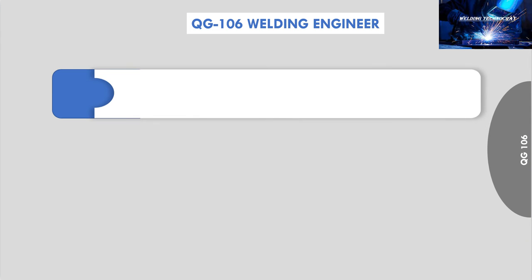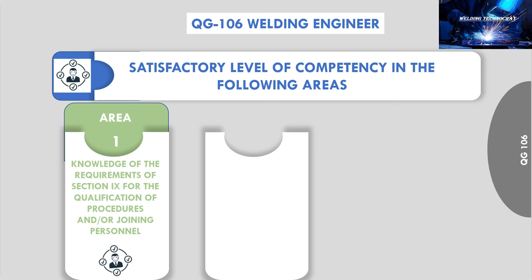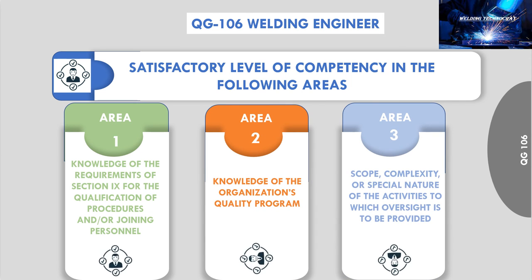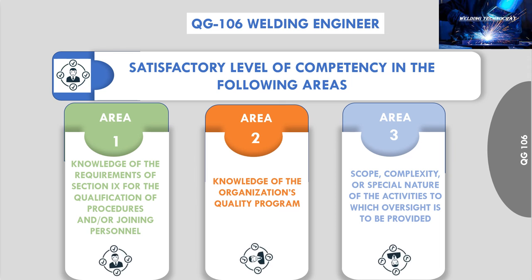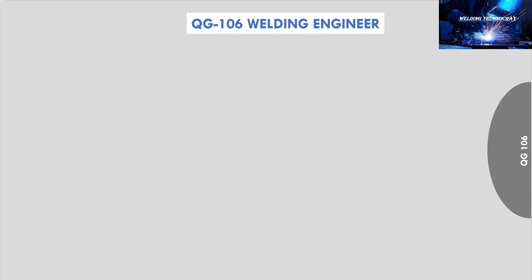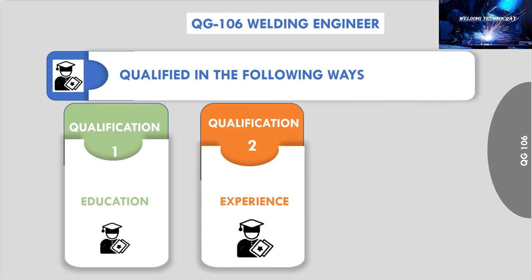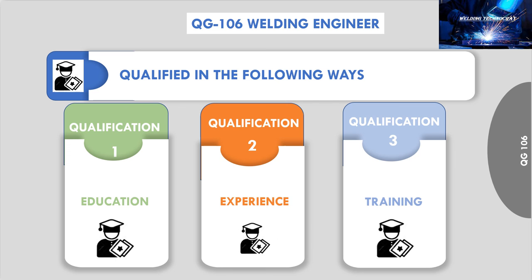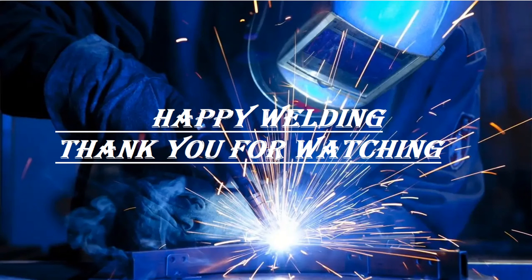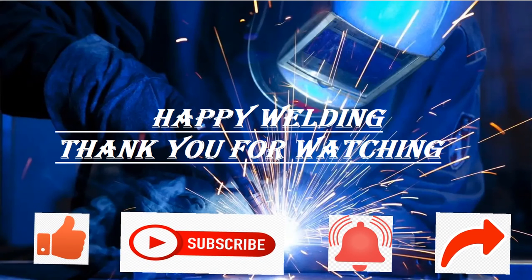In conclusion, as per ASME BPVC Section 9, 2021, QG106 Organization Responsibilities, a welding engineer shall have a satisfactory level of competency in the three areas discussed. Also, a welding engineer can be qualified on the basis of education, experience, or training. Happy welding! Thank you for watching — kindly like the video, subscribe to the YouTube channel, and push the bell notification for new welding-related videos.